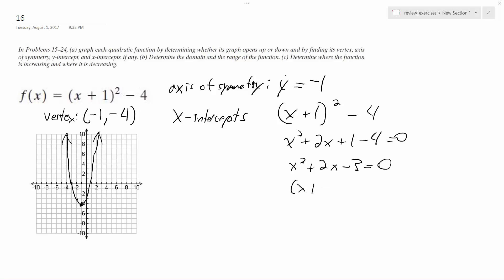So x plus three, x minus one. And so x-intercepts at x equals negative three and one. Yep, that's right.